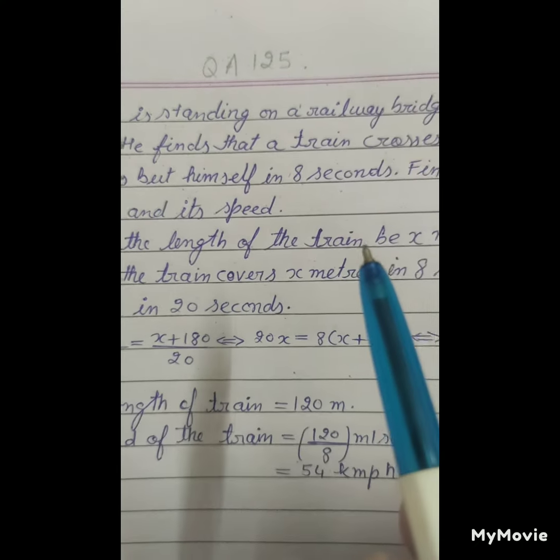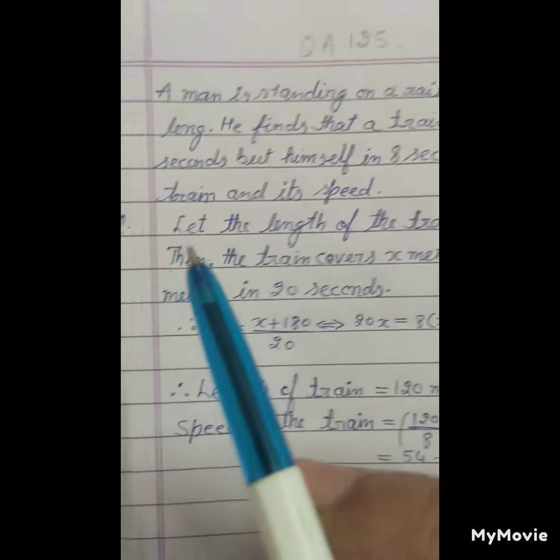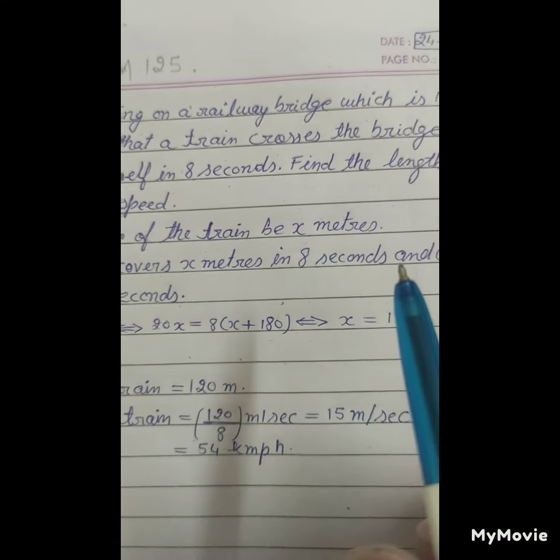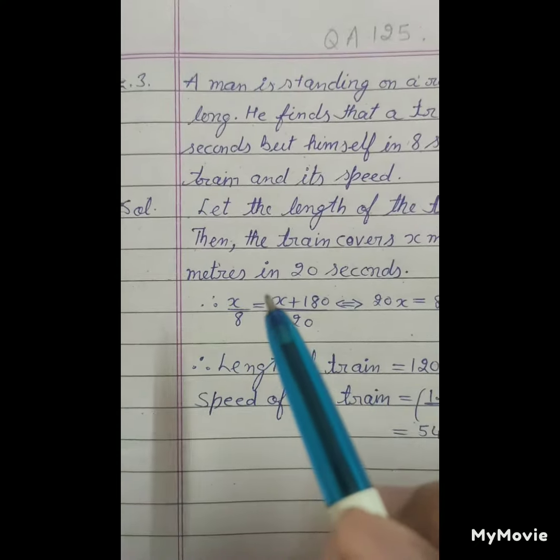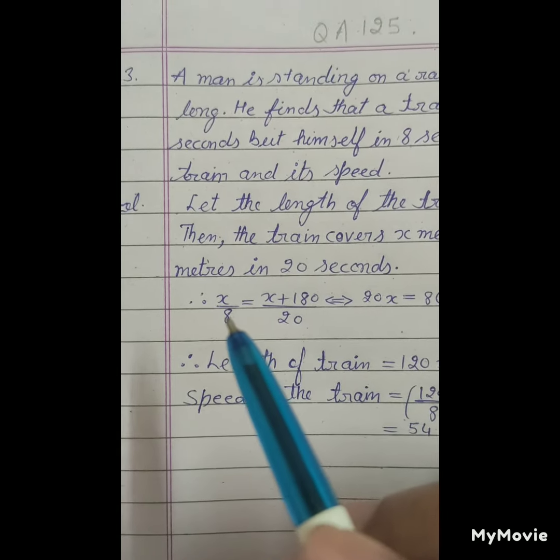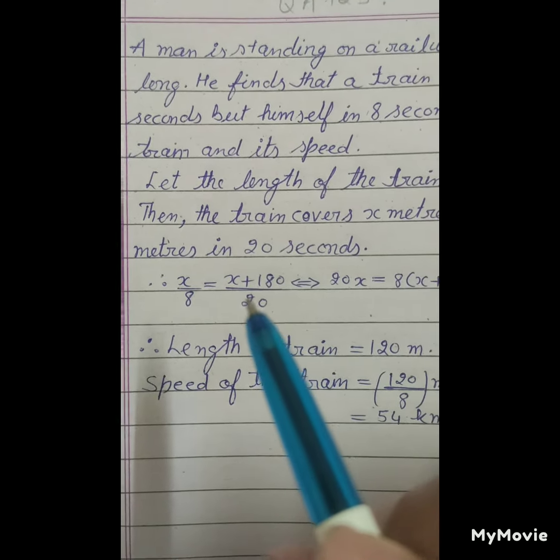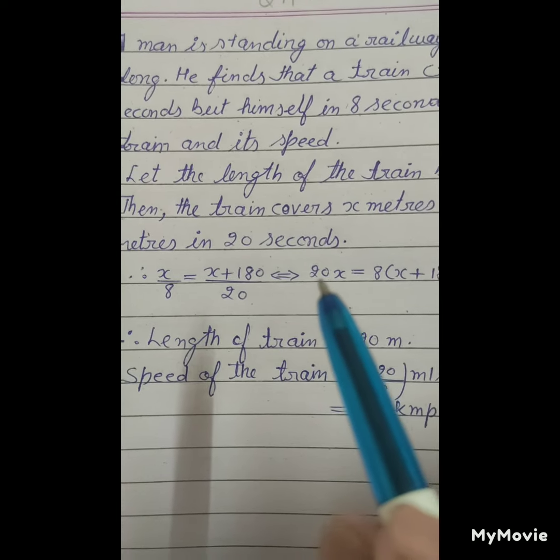Let the length of the train be x meters. Then the train covers x meters in 8 seconds and x plus 180 meters in 20 seconds. So x upon 8 equals x plus 180 upon 20.